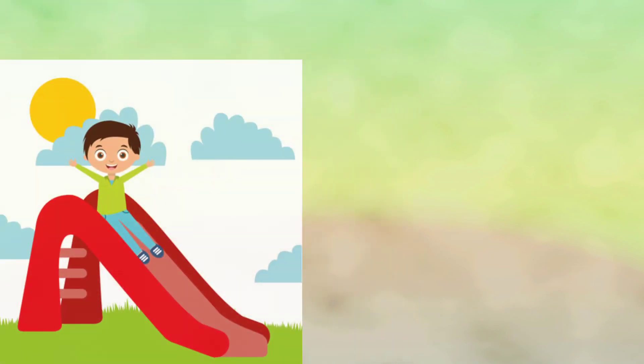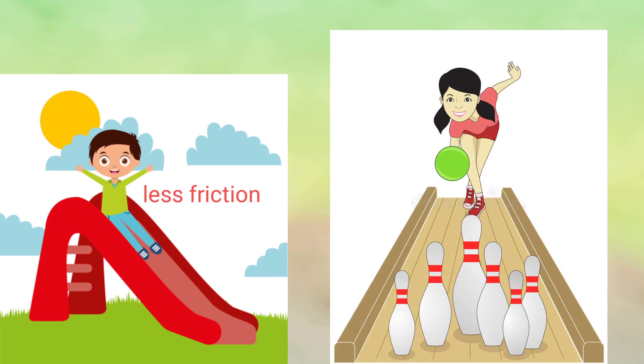Here, the boy wants to go faster to enjoy the ride. So, should the friction be less or more? There should be very less friction. Here is another example. Here in this bowling game, there should be none or least friction so that the ball goes as fast as possible because the smoother the surface, the lesser the friction.